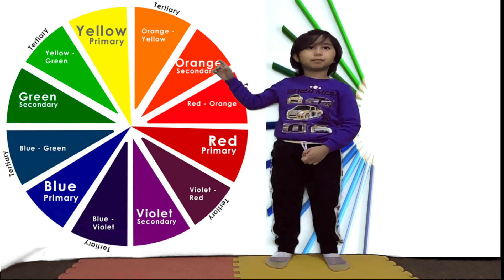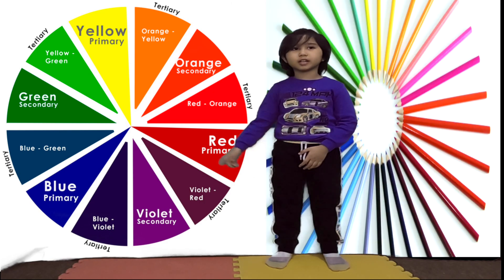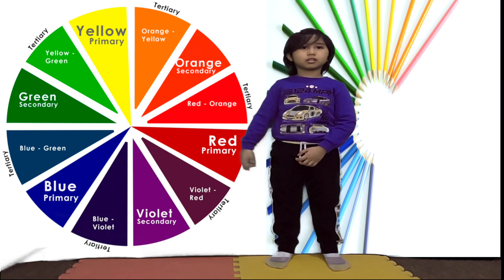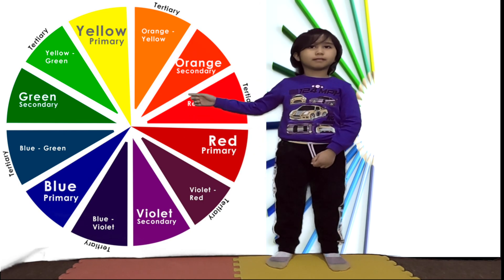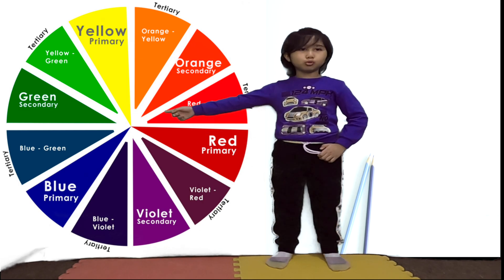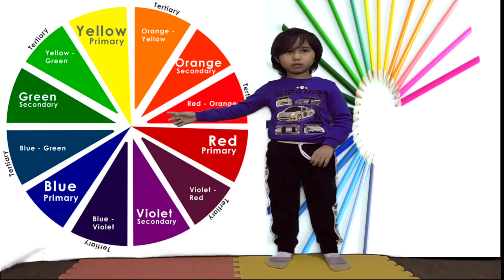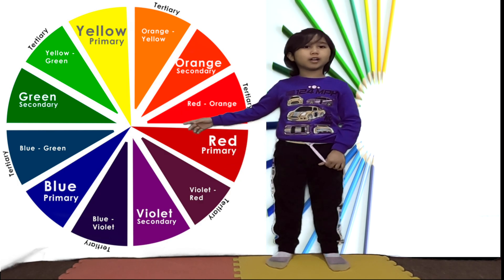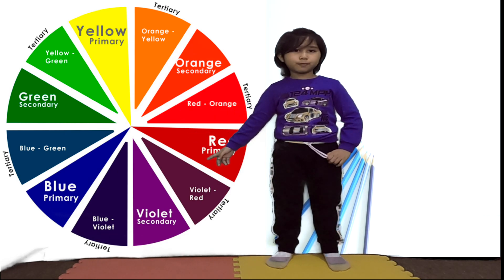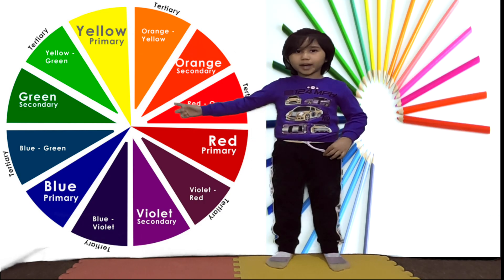For example, orange and yellow gives you yellow-orange. Orange and blue gives you blue-orange. Green and blue gives you blue-green. Green and yellow gives you yellow-green. Violet and red gives you red-violet. Violet and blue gives you blue-violet.